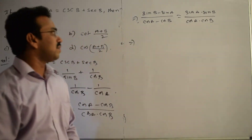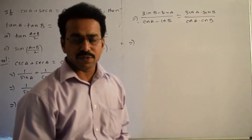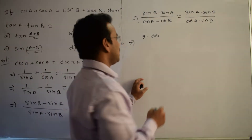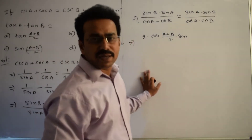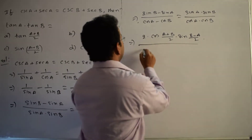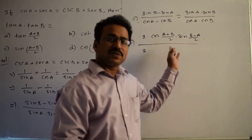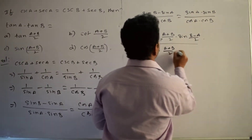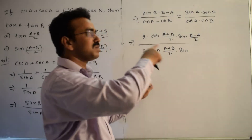There is a formula we apply here. sin C minus sin D equals 2·cos((C+D)/2)·sin((C-D)/2), so sin B minus sin A gives 2·cos((A+B)/2)·sin((B-A)/2). Similarly, cos C minus cos D equals negative 2·sin((C+D)/2)·sin((C-D)/2), giving 2·sin((A+B)/2)·sin((B-A)/2) in the denominator.